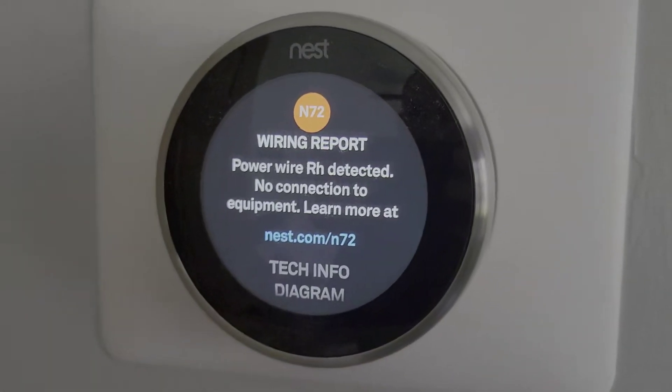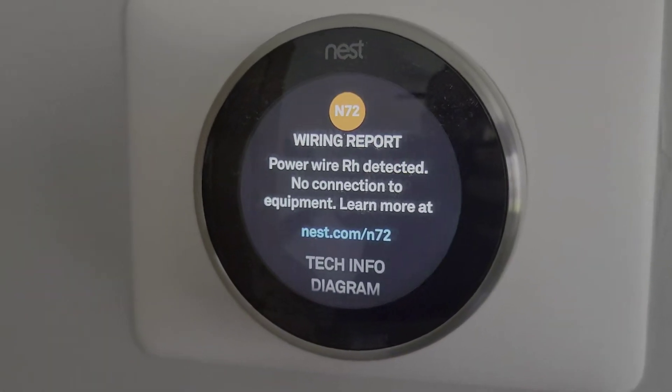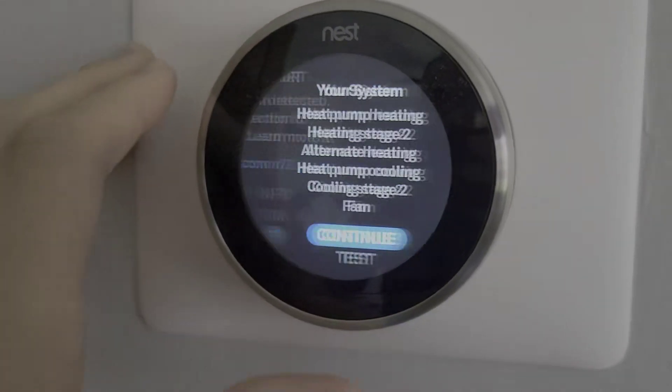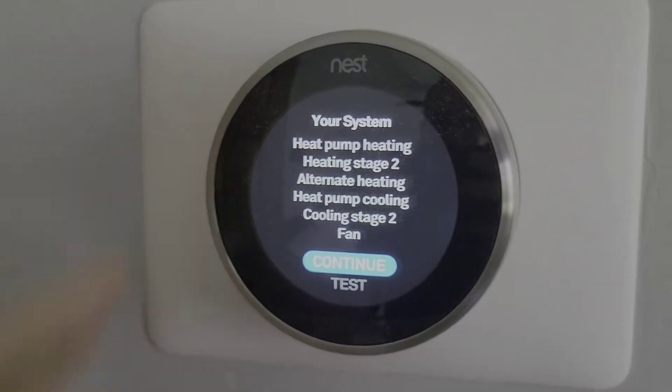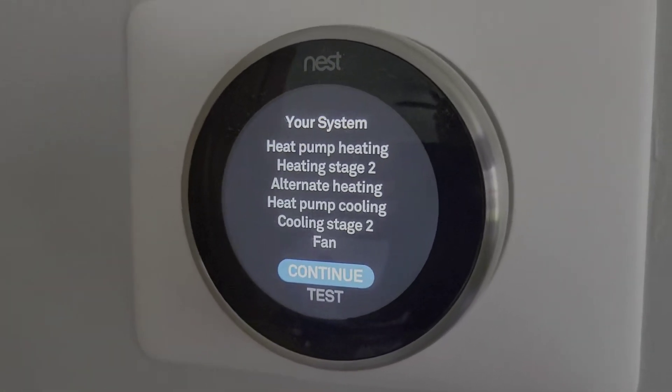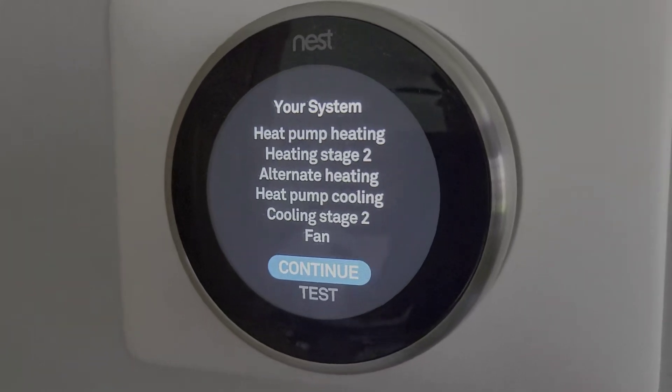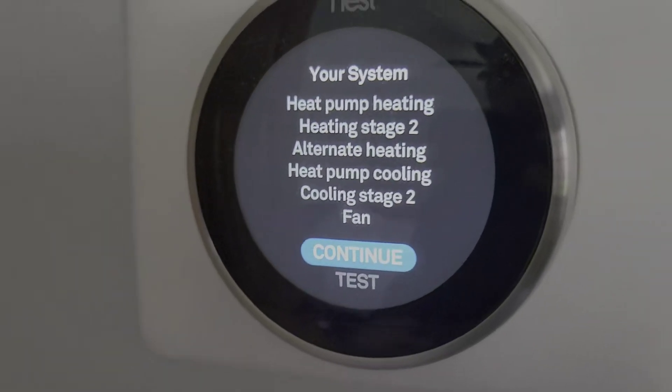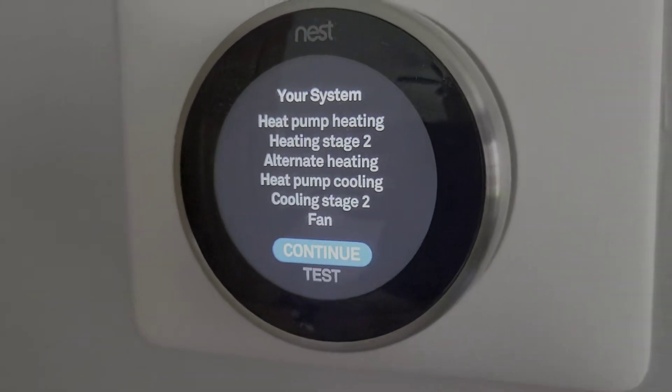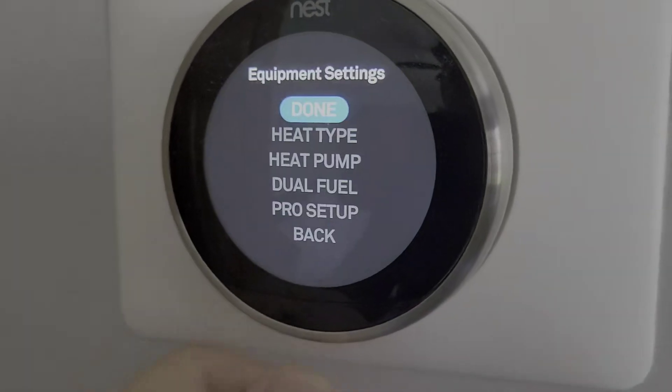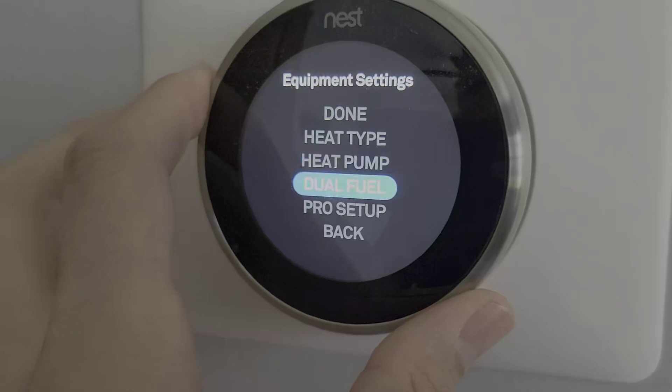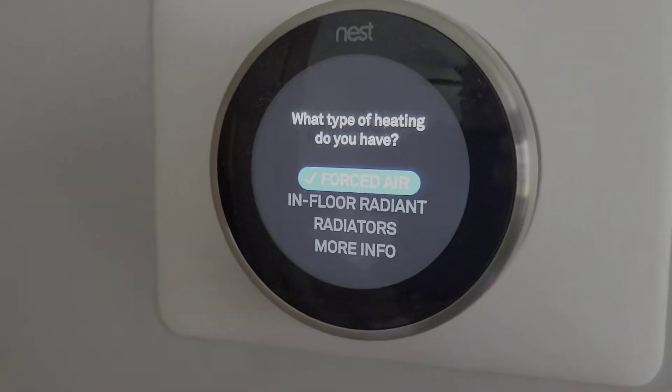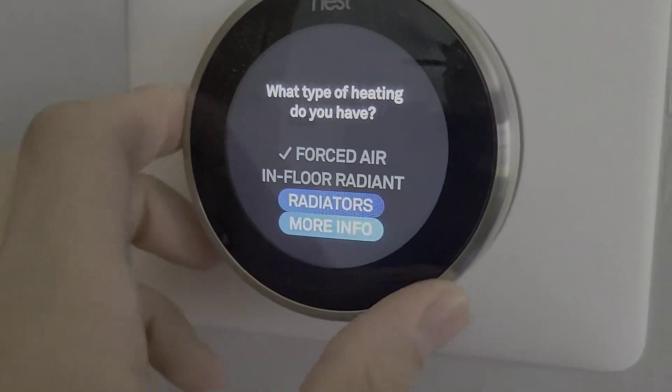Continue. It's going to tell you, hey, power wires detected, no connection to equipment. Again, not that important. All right, and it's showing you what all is available to you. So heat pump heating, heating stage two, an alternate heat, heat pump cooling, cooling stage two, and a fan. And you could test through the various things there. Probably one thing I want to show you that's important. Again, when you click on heat type, that's where it's going to let you say like, hey, forced air. One thing that's important is the heat pump setting.